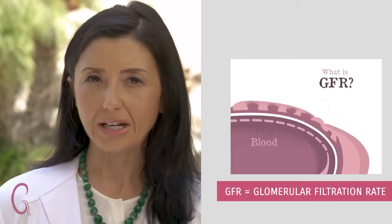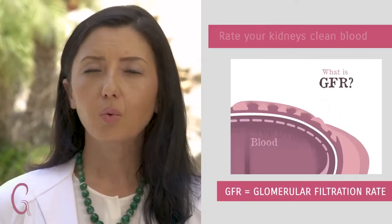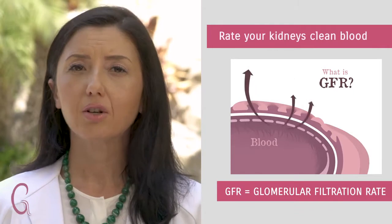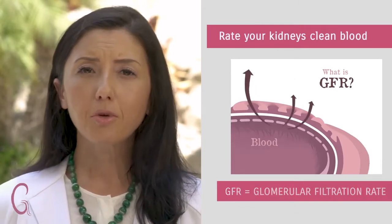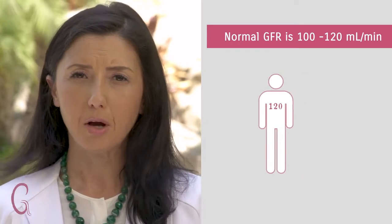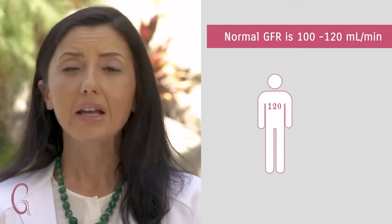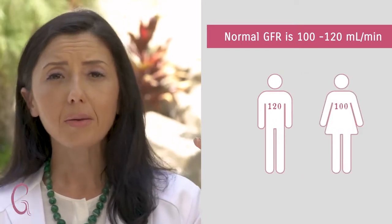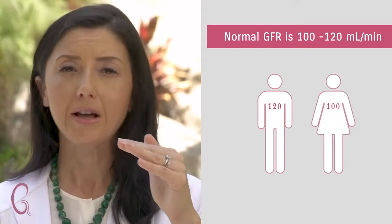How do we diagnose chronic kidney disease? Before we diagnose that, I want to familiarize you with the term GFR. This stands for glomerular filtration rate — the rate that your kidneys are cleaning your blood. The normal GFR in a healthy young male is 120 ml per minute; in a healthy young female it's 100 ml per minute.